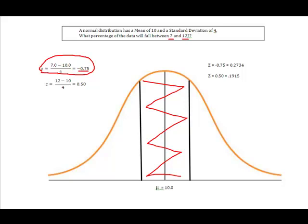And I already knew that was going to be a negative z-score because I know that 7 is going to fall over here below the mean. I turned around and took 12, converted that one to a z-score, just saying 12 minus the mean of 10 divided by the standard deviation of 4 gives me a z-score of 0.50.